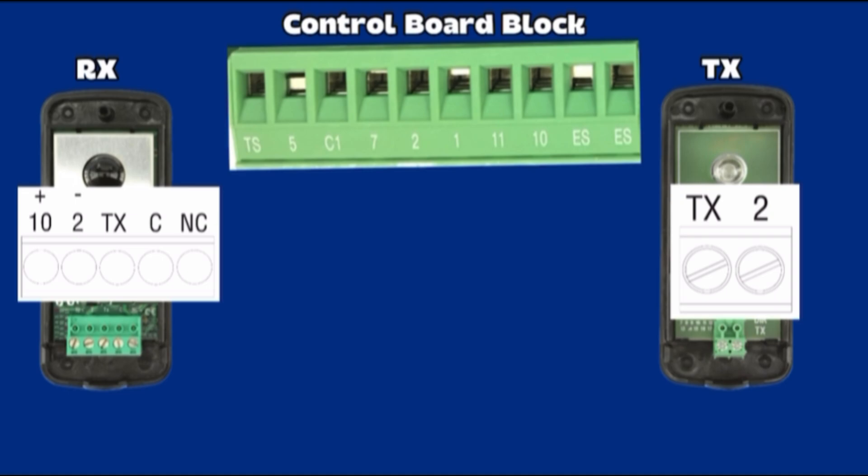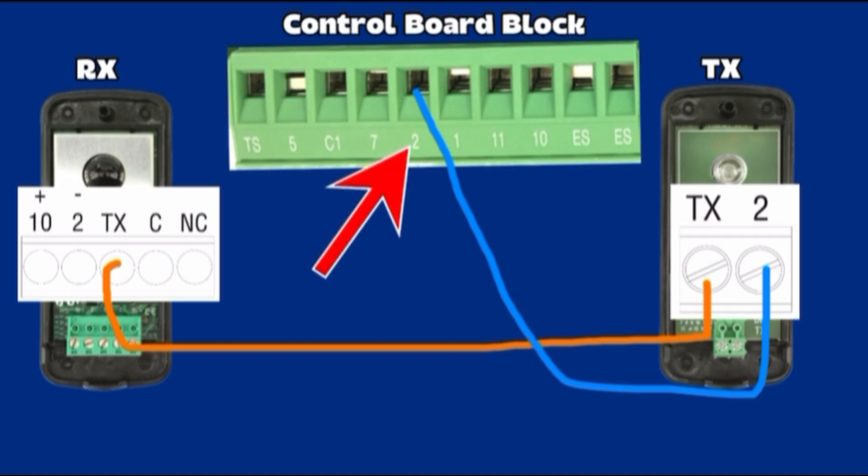Tx transmitter photo cell wiring. Tx terminal on transmitter connect to terminal Tx on receiver sensor. Terminal 2 of transmitter sensor connects on control board Terminal 2. Terminal 2 is ground and common. The transmitter only needs power, usually plus 24 volt DC from the control board.